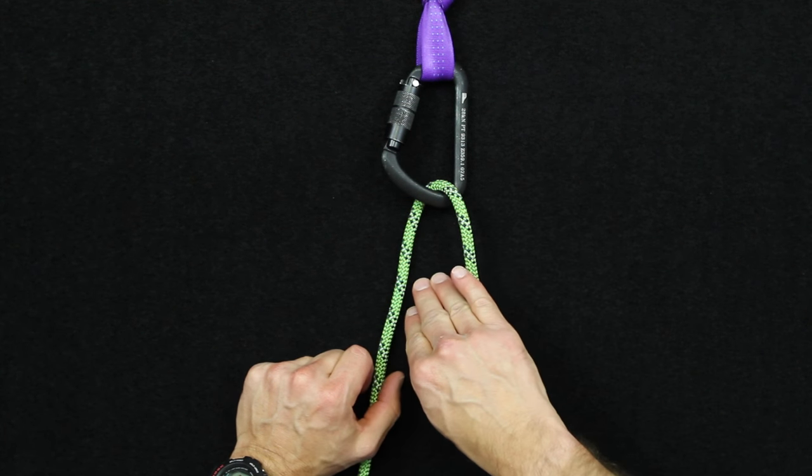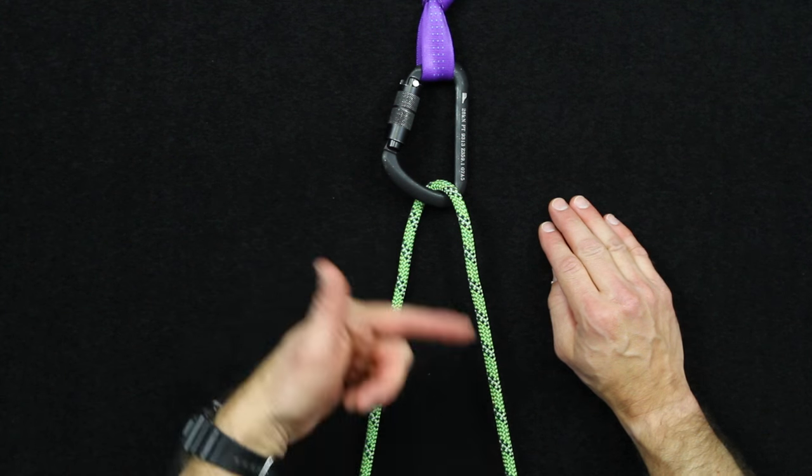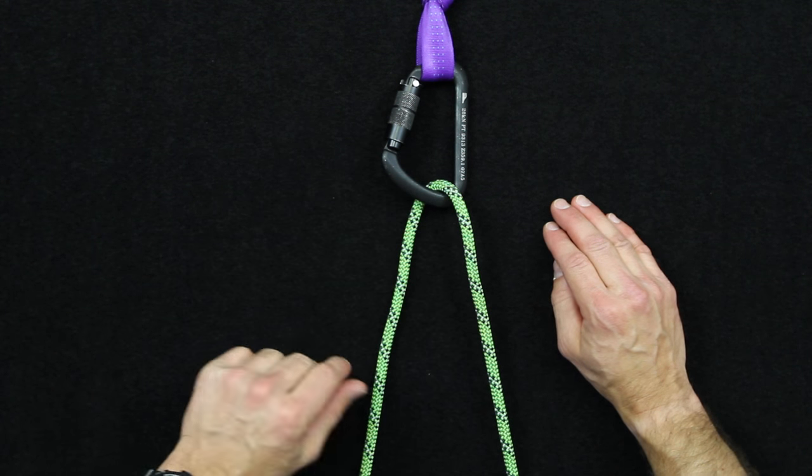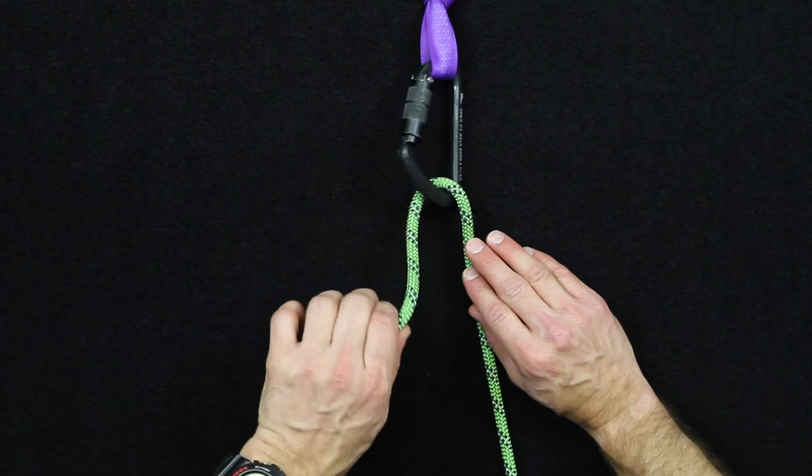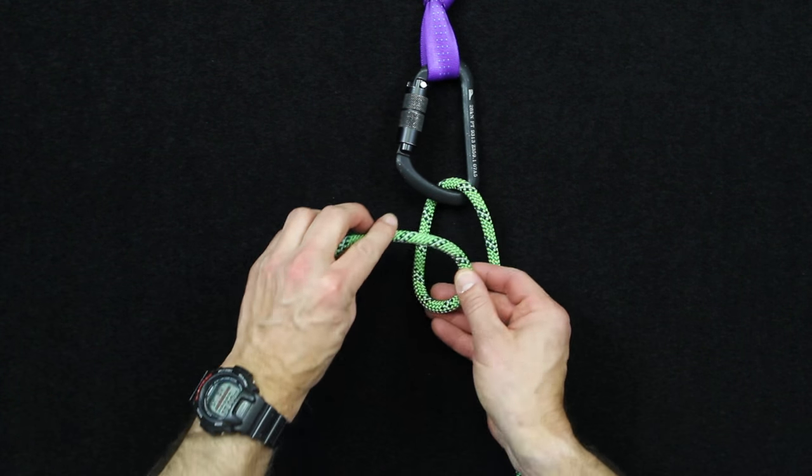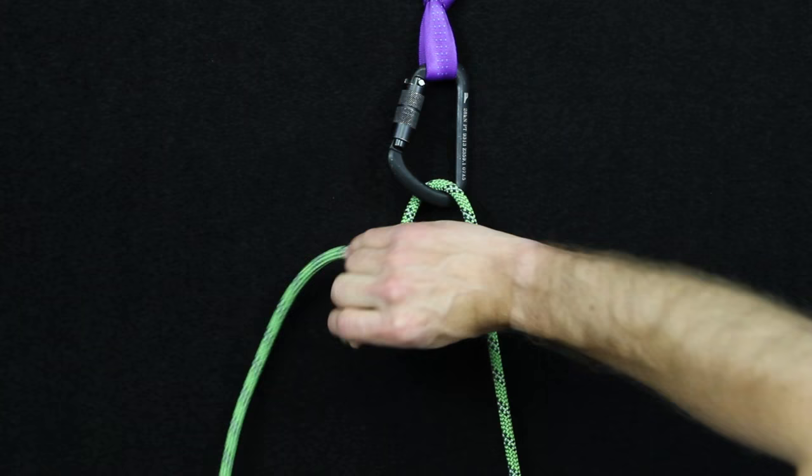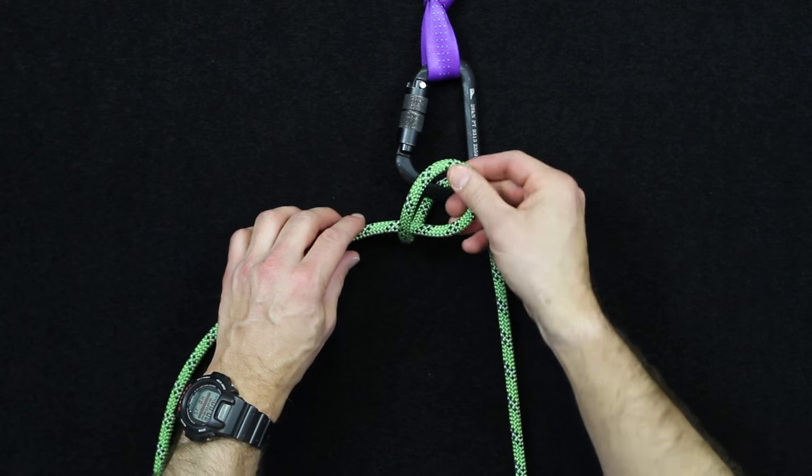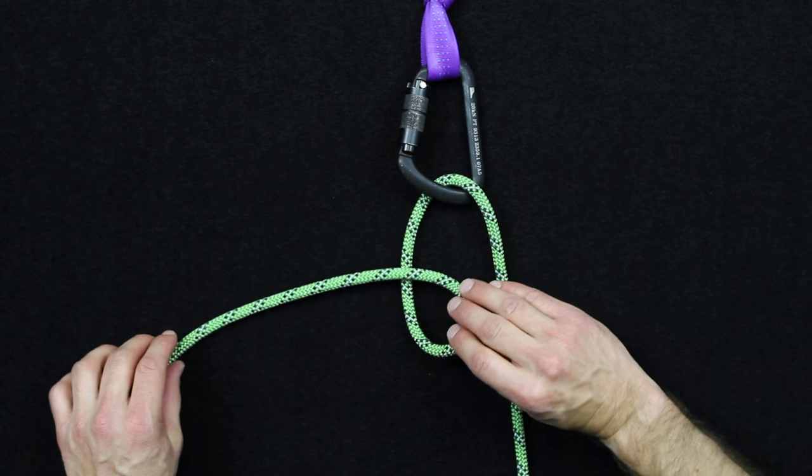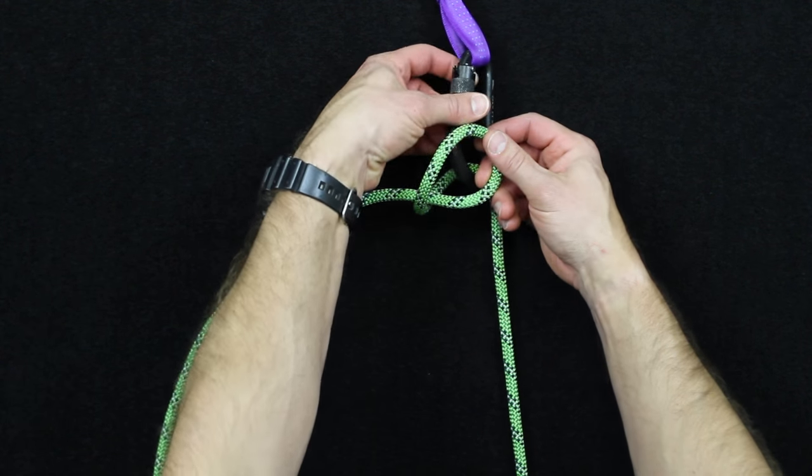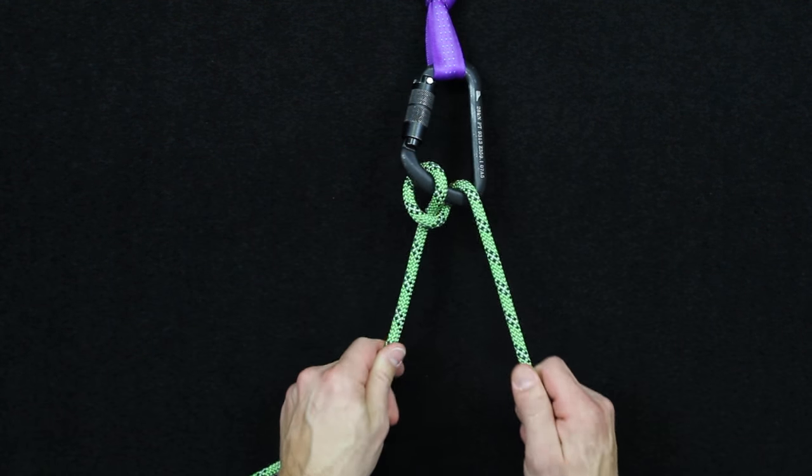Okay guys, before we tie the Munter Mule, first I wanted to show a different way of starting the Munter on a line that you might already have through a carabiner. What you can do is take a line like this, you can flip an overhand knot up like that. So basically if you have your hand here, then you're going to take that loop and just clip up into the carabiner, creating the Munter.